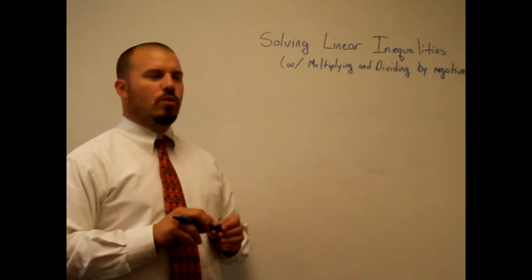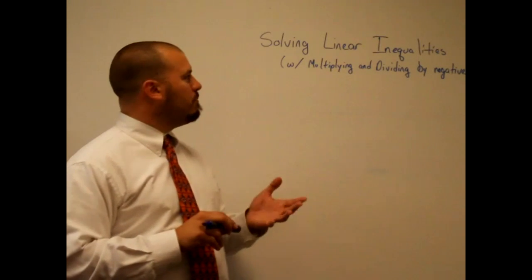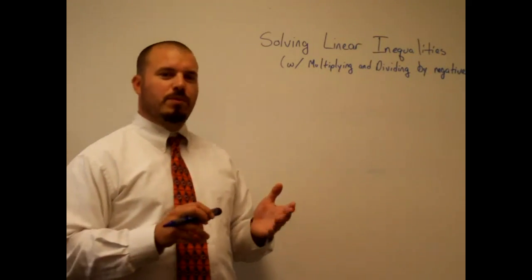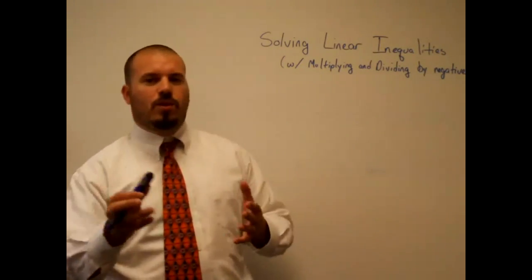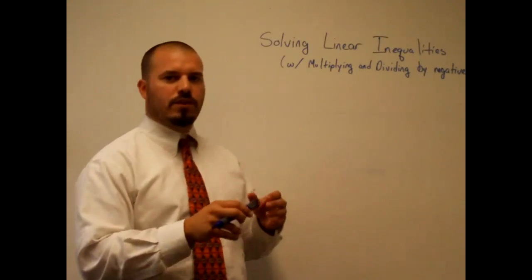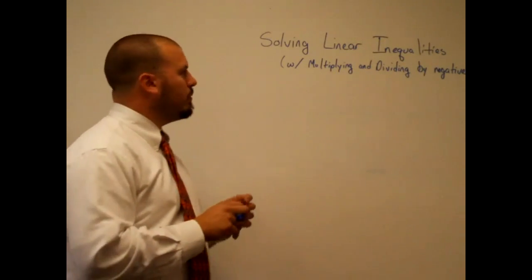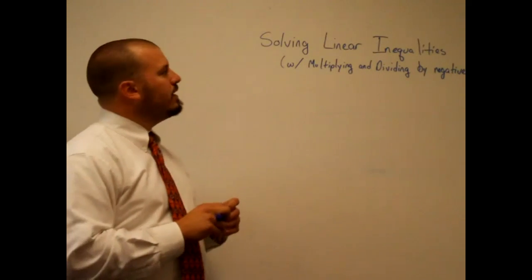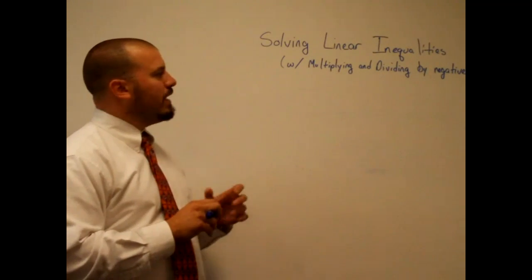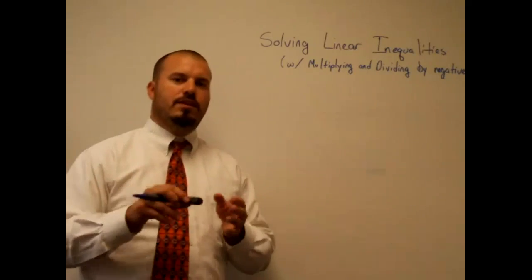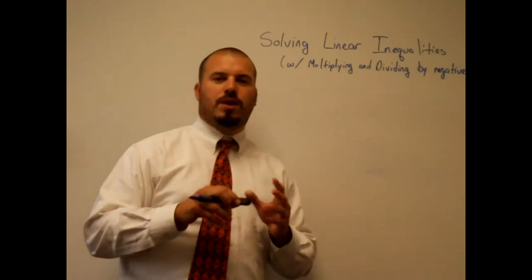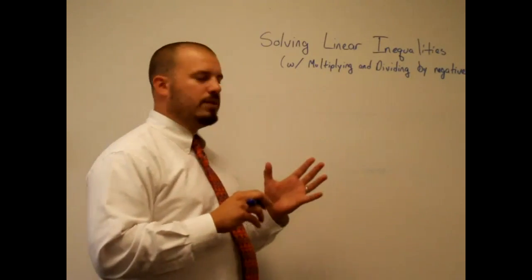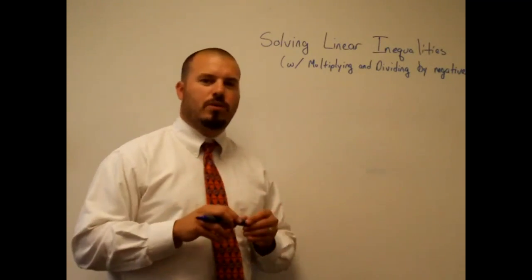Let's take a look at solving linear inequalities that involve multiplying or dividing by negative numbers. You've probably been told, or maybe you remember, that you're supposed to flip the inequality — reverse the inequality — when you do multiply or divide by a negative number. For this particular video, I'm just going to be talking about why we flip the inequality.